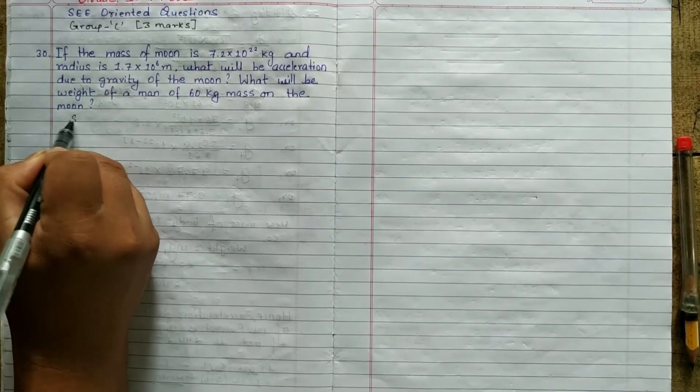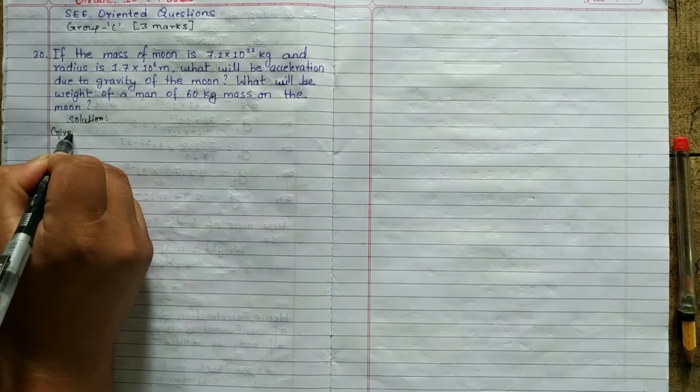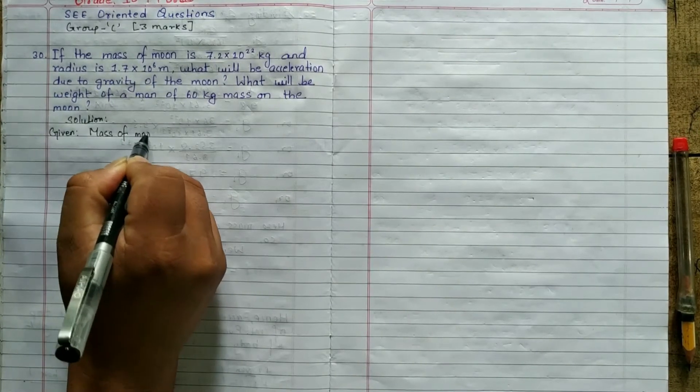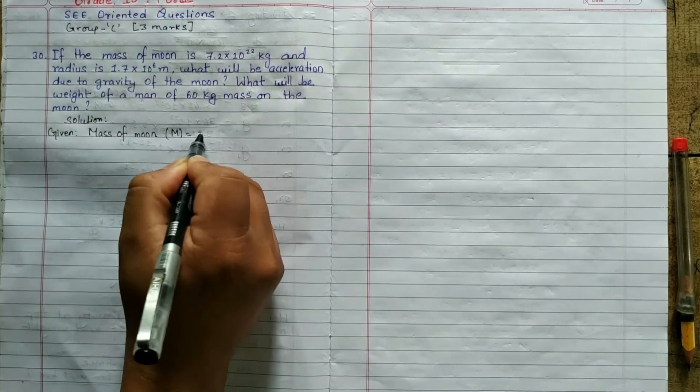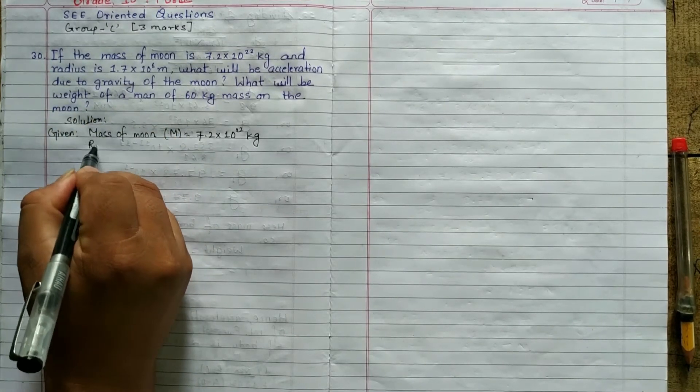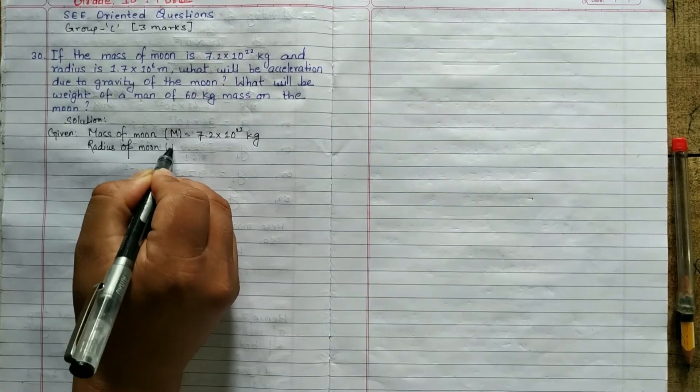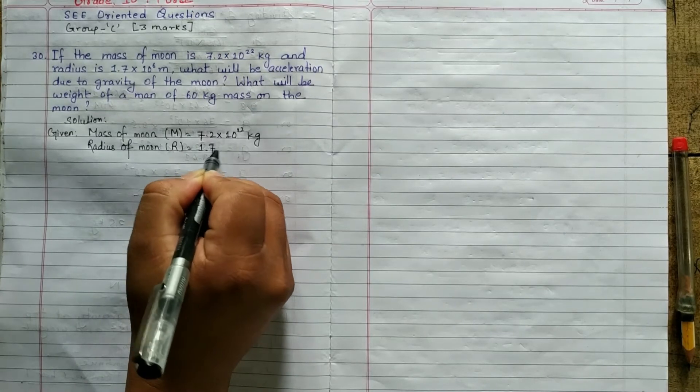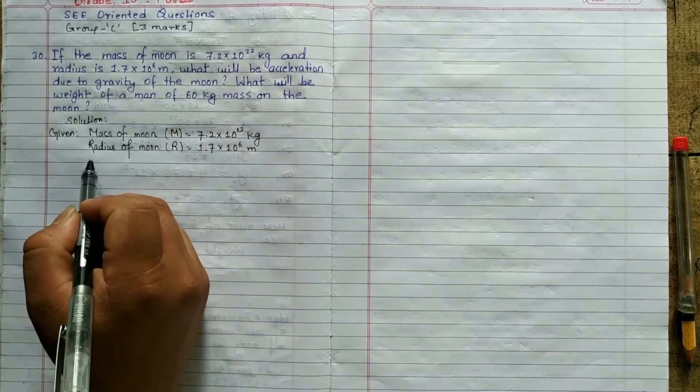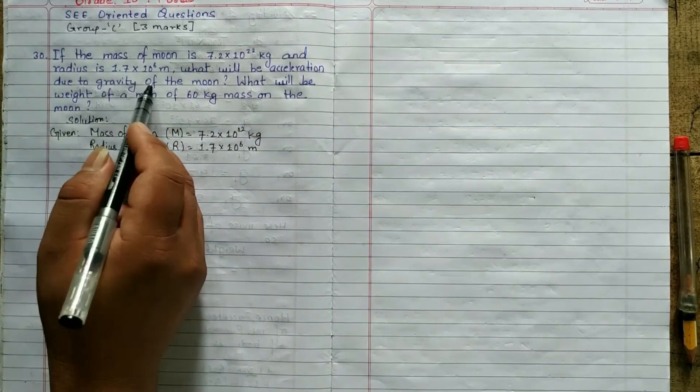Solution: Given mass of moon M equals to 7.2 × 10^22 kg. Radius of moon R equals to 1.7 × 10^6 meter. What will be the acceleration due to gravity of moon?